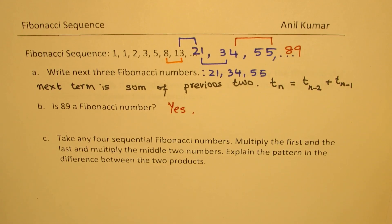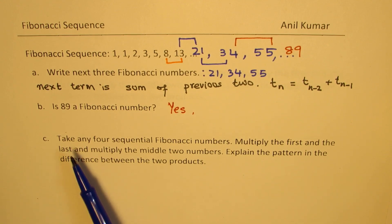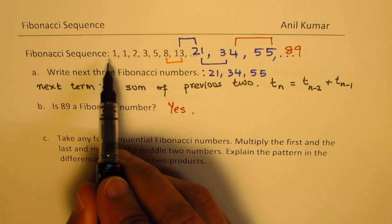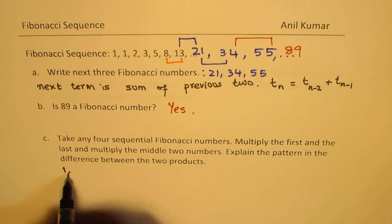Now, part C is very interesting. We need to find a pattern. It says take any four sequential Fibonacci numbers. When we say any four, let's take 1, 1, 2, 3 itself.